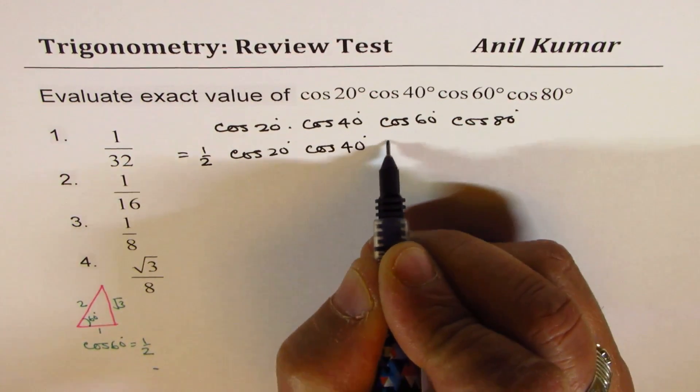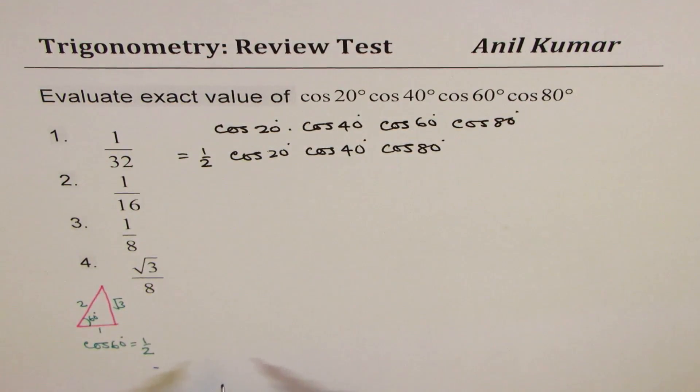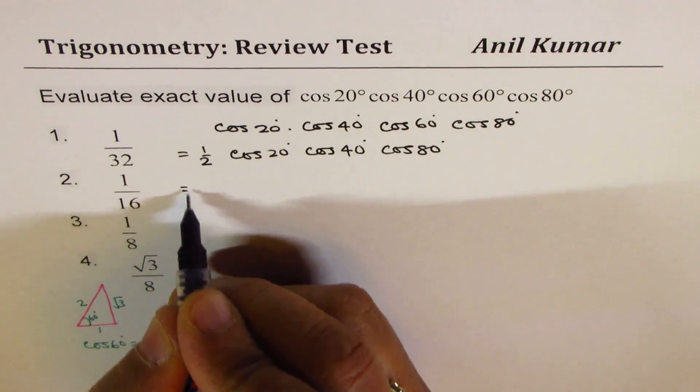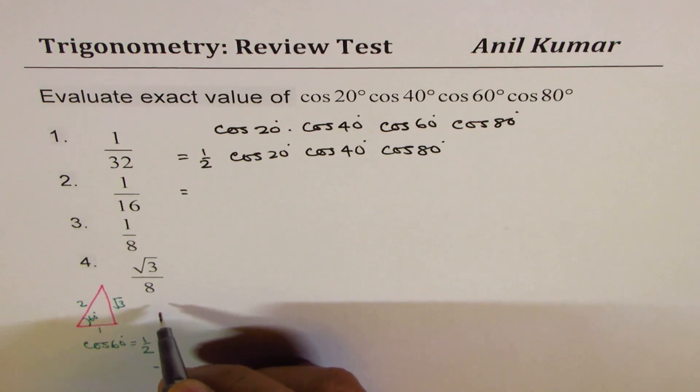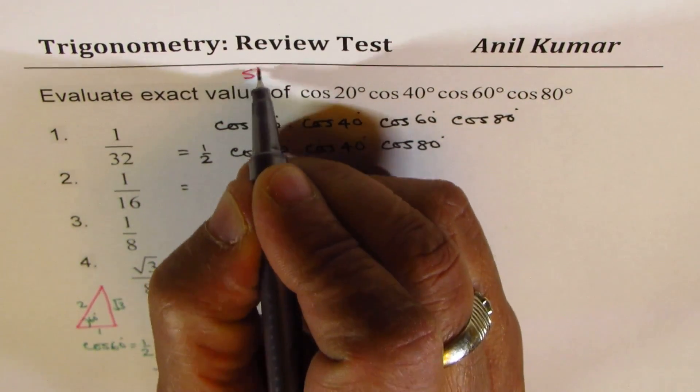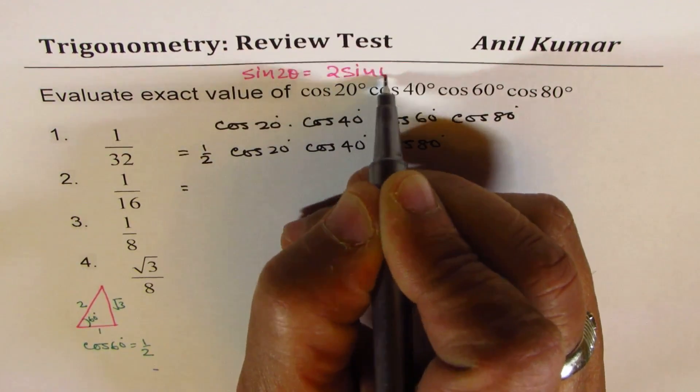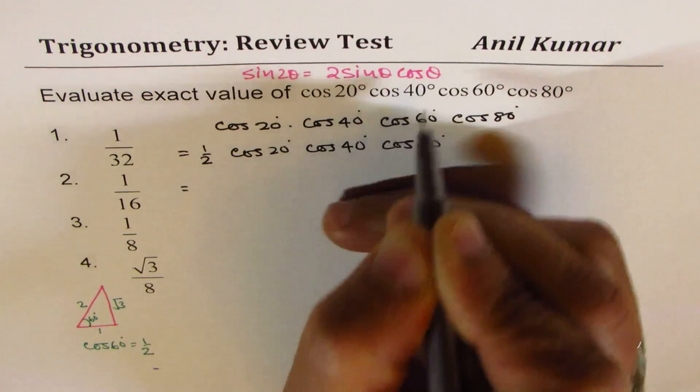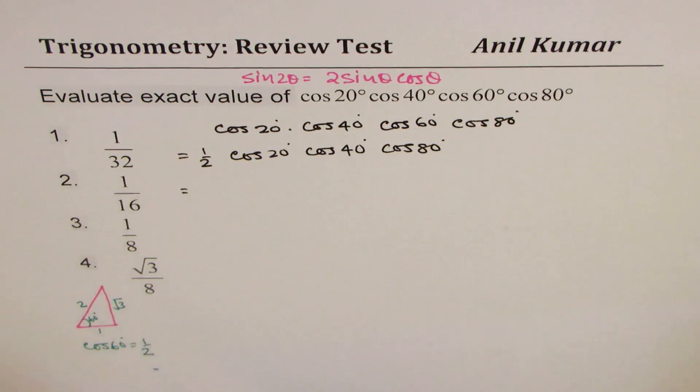Now the trick involved here is we'll use the formula sine 2a or sine 2 theta formula. Let me write down the formula somewhere here: sine 2θ equals 2 sine θ cos θ, and this is a key formula which will help you solve this particular question.